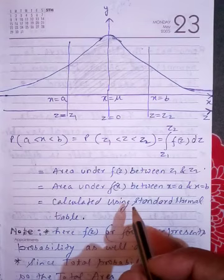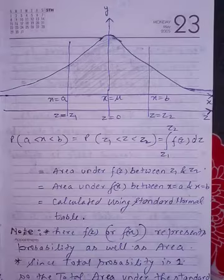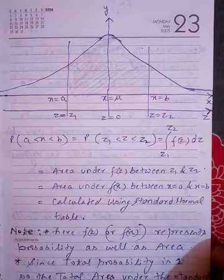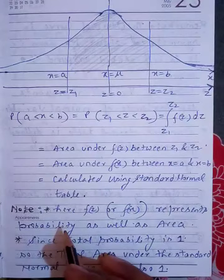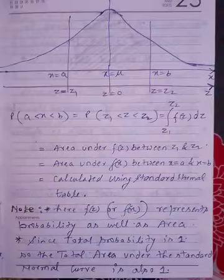We use the standard normal table to calculate this area. When we do numerical problems, we will show how to find values from this table. Here f(z) or f(x) represents both the probability and the area — so when we talk about probability, we can also call it area, since we integrate f(x) to get the area, and that area equals the probability.